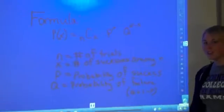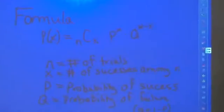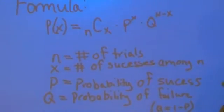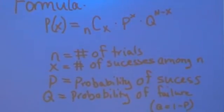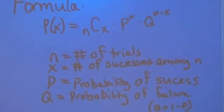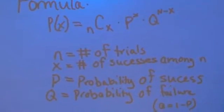The formula for the distribution is P(x) equals nCx times p to the x power times q to the n minus x power.